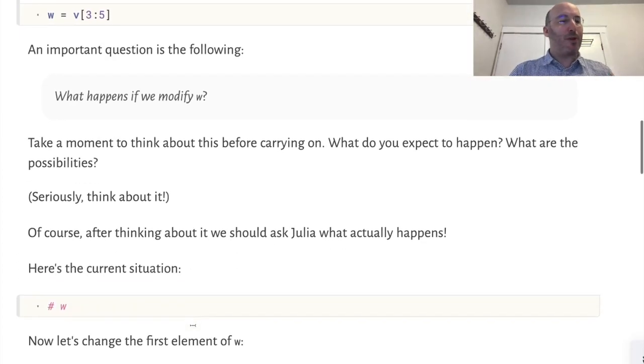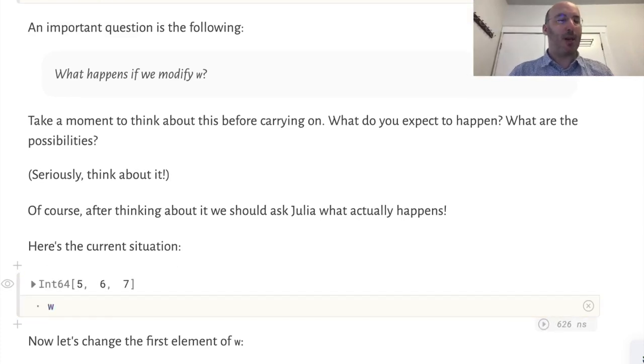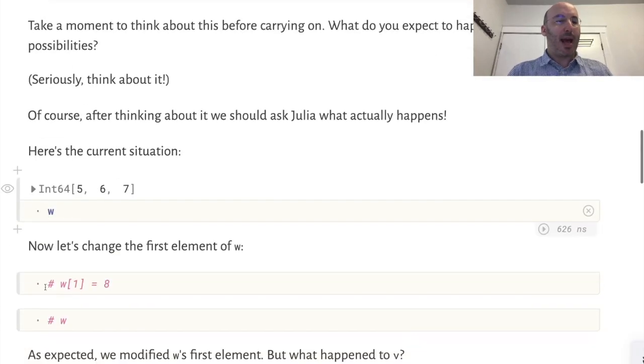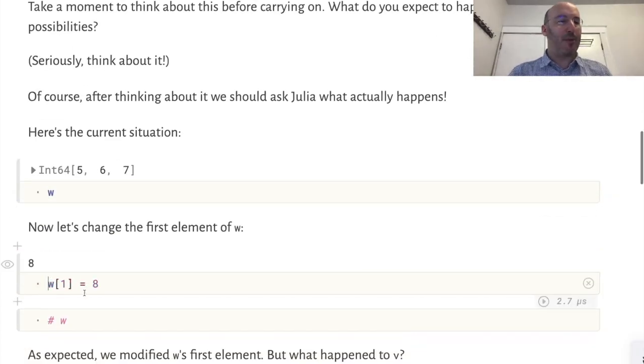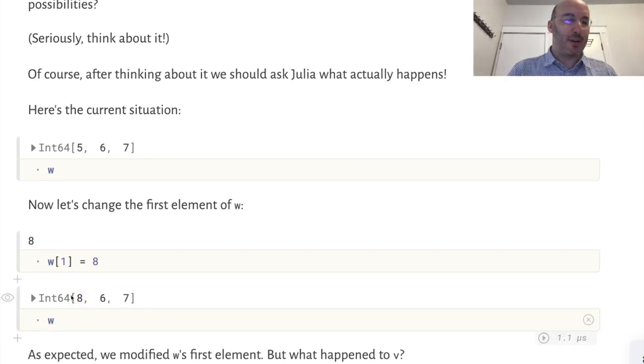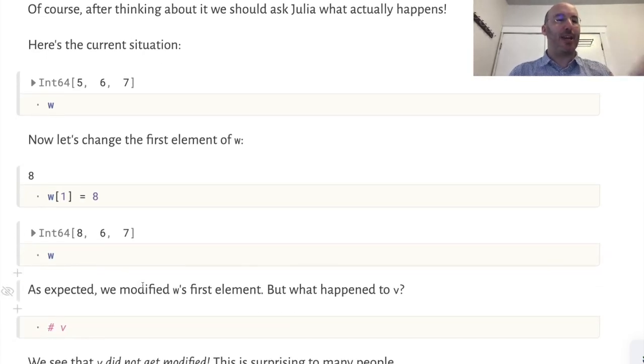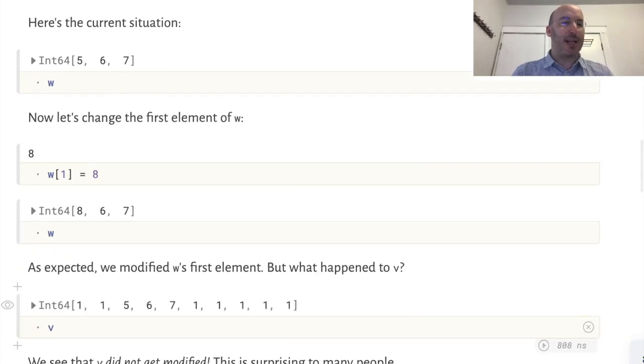Once we've thought about it, we should ask Julia what it thinks. w looks like an array. Let's modify the first element of w. We expect that the first element correctly changed to 8. But the question is, did v change? We took a piece of v and called it w. We're now modifying something inside w. The answer is that it does not change.